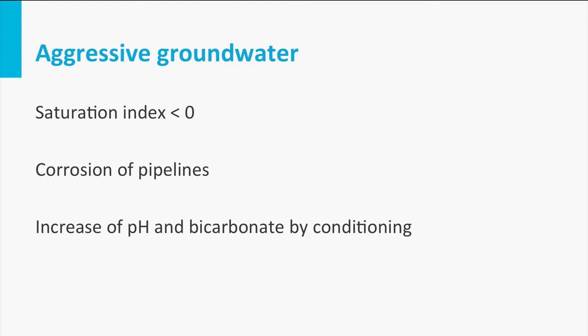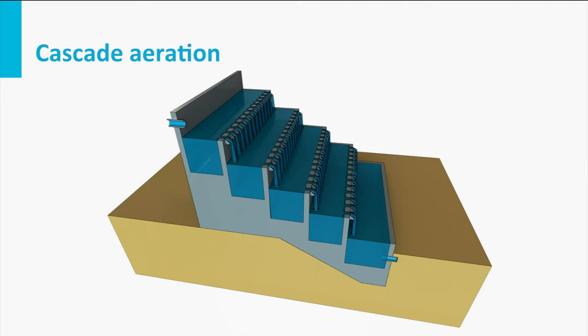This is caused by subsurface breakdown processes resulting in carbon dioxide in the water above the equilibrium concentration. With the saturation index (SI) below zero, the water can corrode the pipelines during distribution. The SI can be increased through aeration, but because of low bicarbonate concentrations, it may still be recommendable to apply a conditioning step, such as limestone filtration.